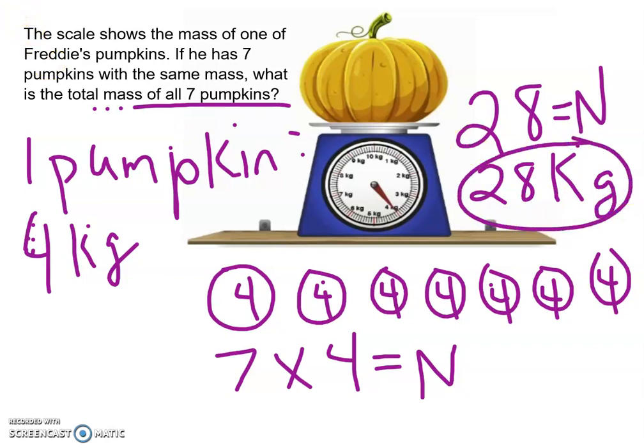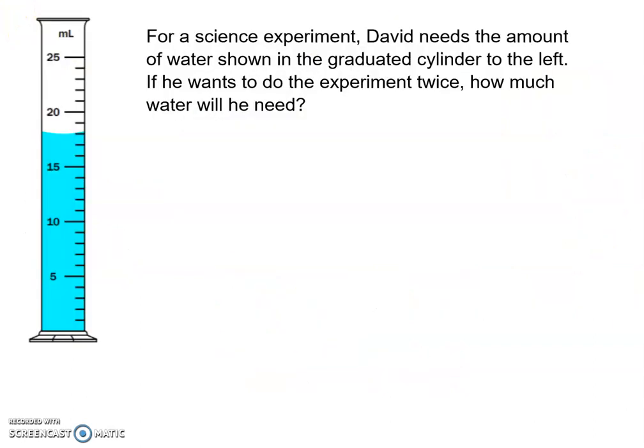All right, let's try another one. All right, this one says, for a science experiment, David needs the amount of water shown in the graduated cylinder to the left. If he wants to do the experiment twice, how much water will he need?